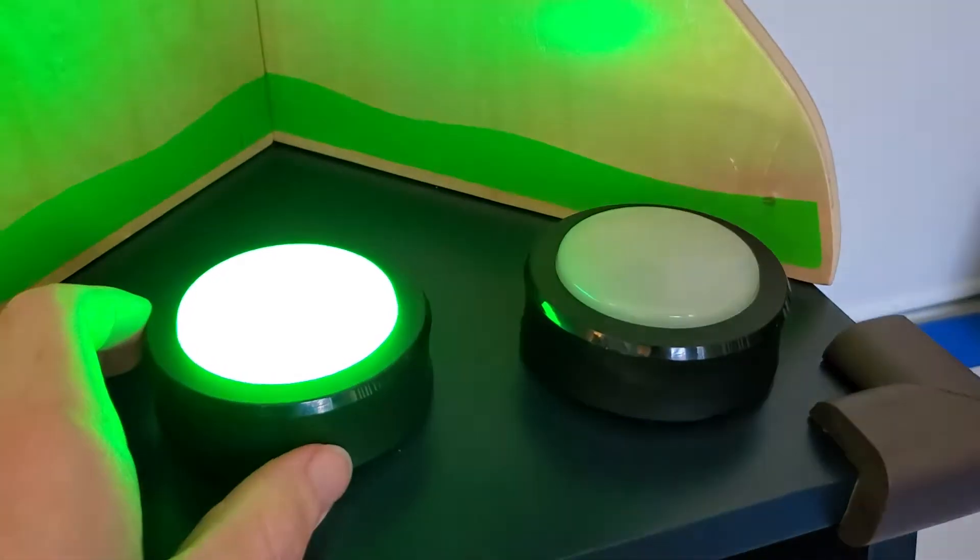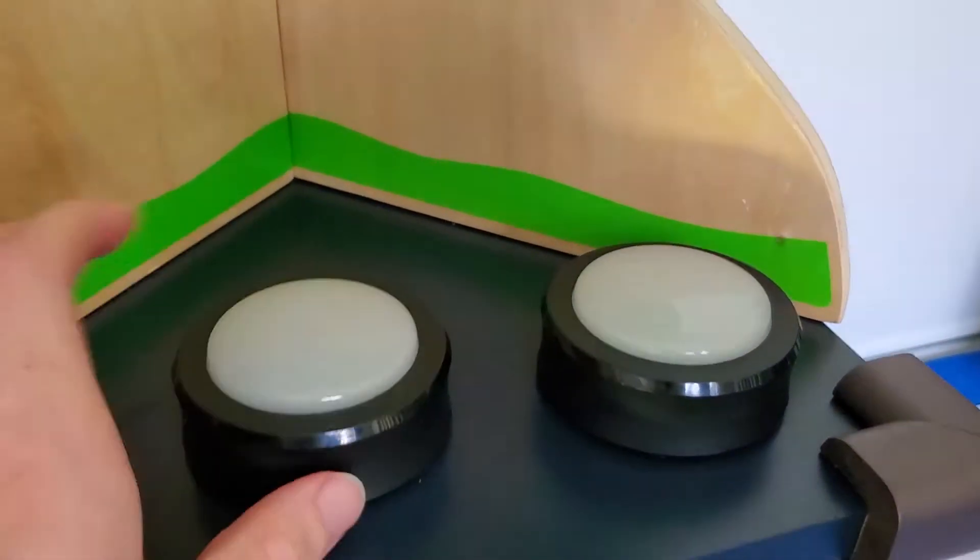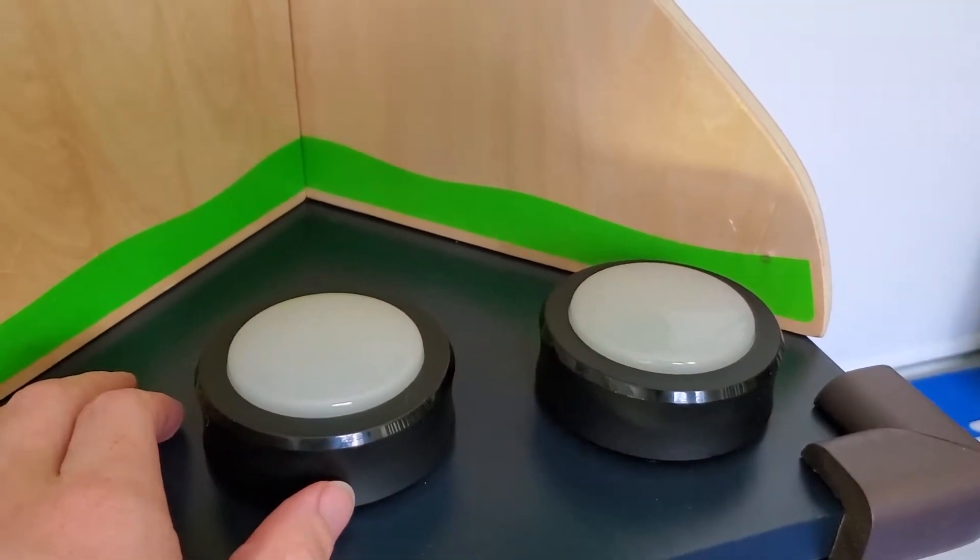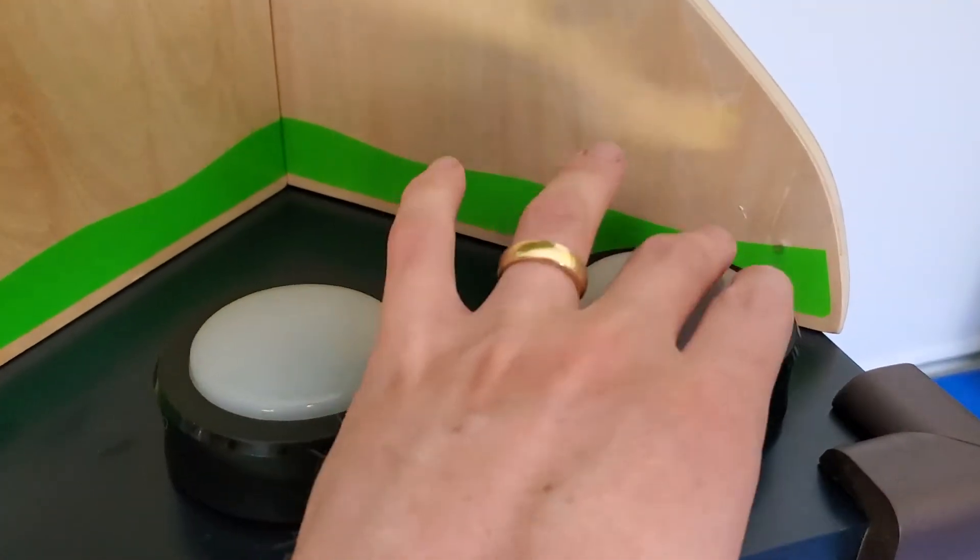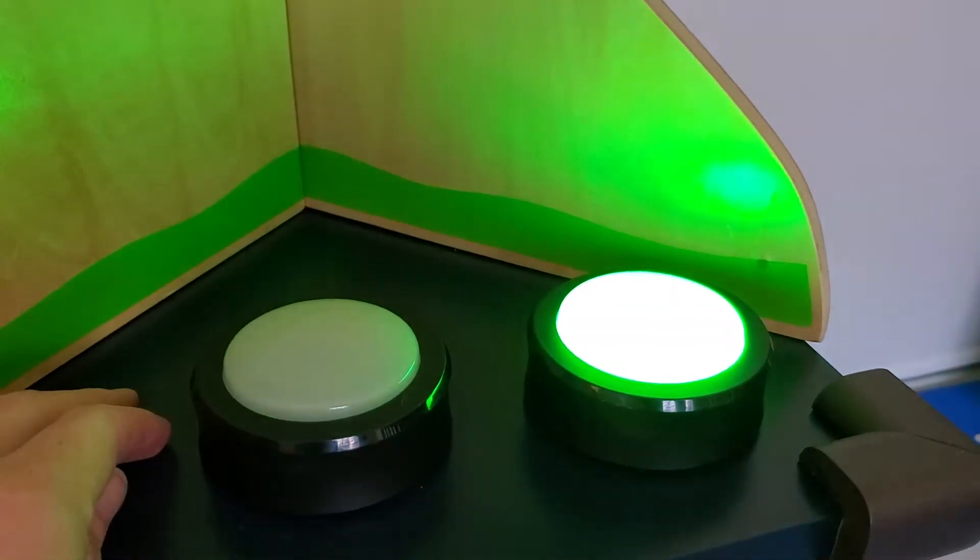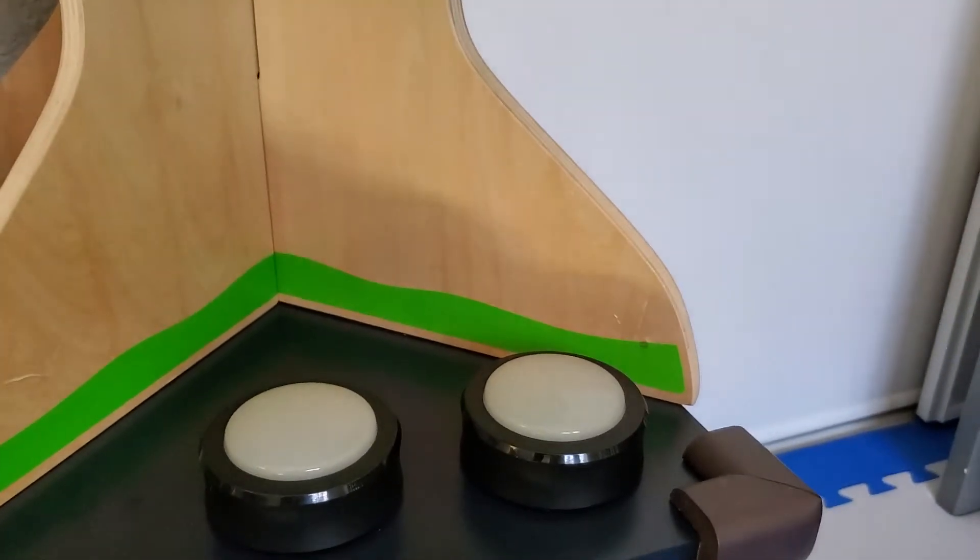And then it will go ahead and run the routine in the room. So if I press this one, that's my off button, and you can see the lights are already off. If I press this one, that's my on button, and you can see the lights, it's a little bit hard to see here. I'll take a look at the lights.